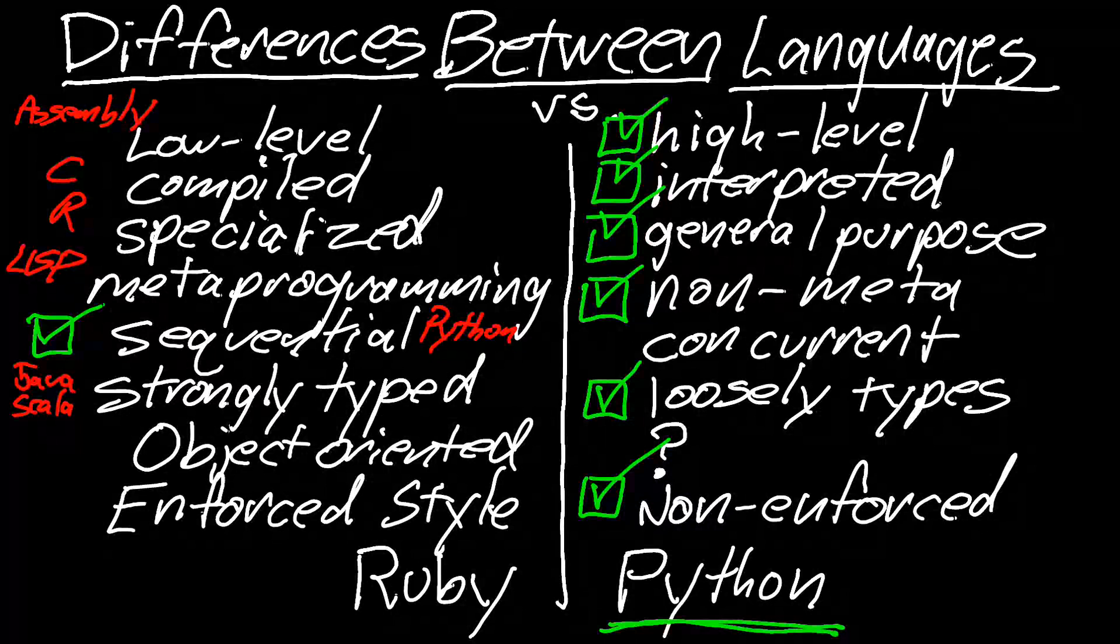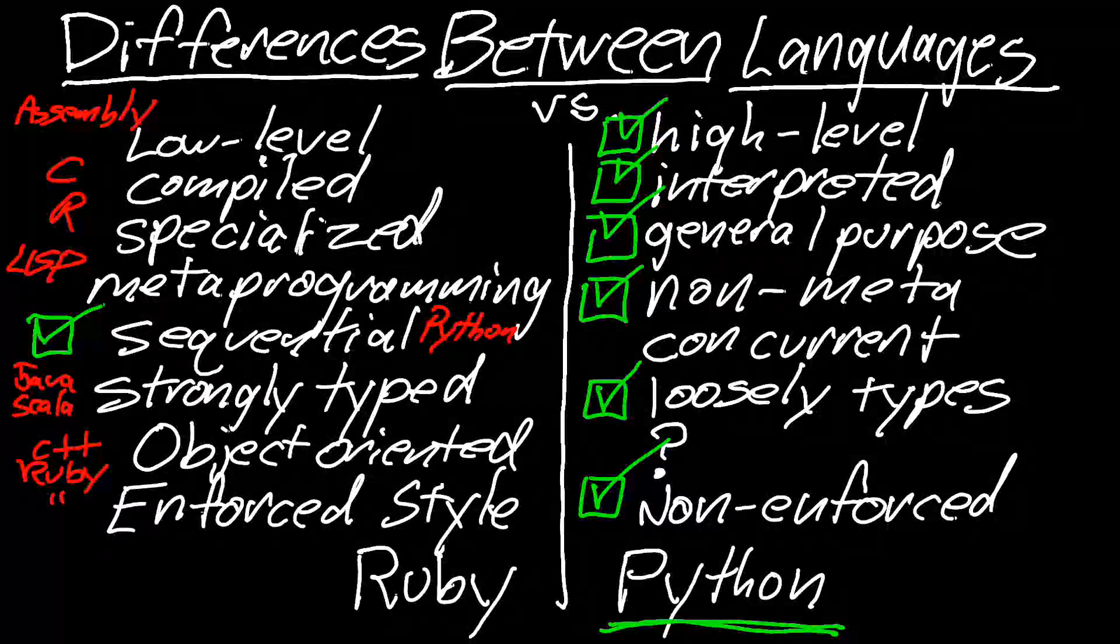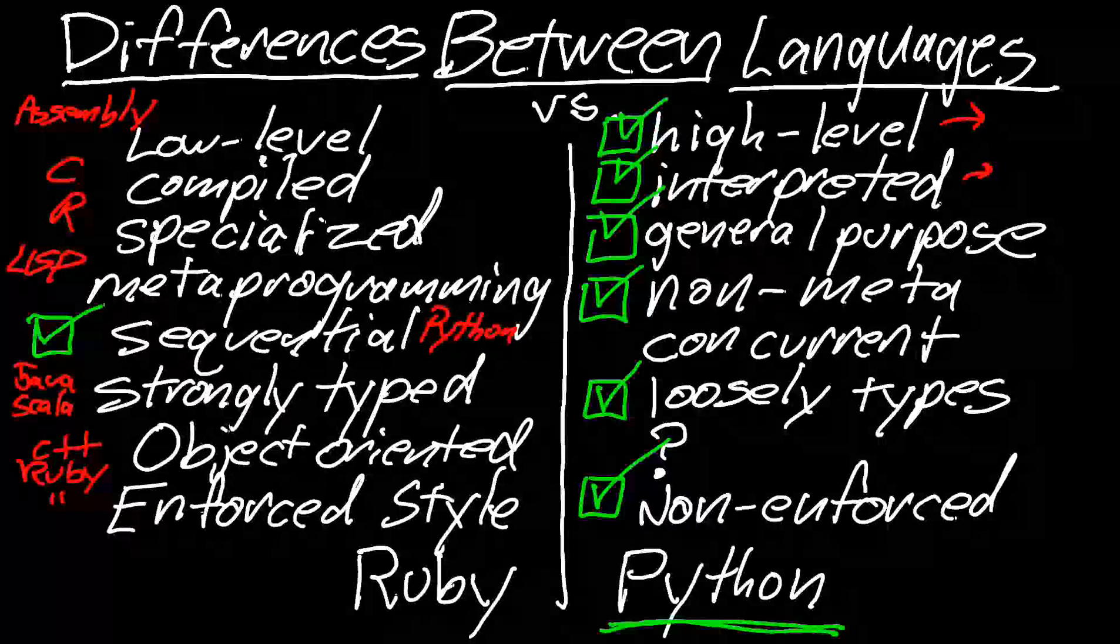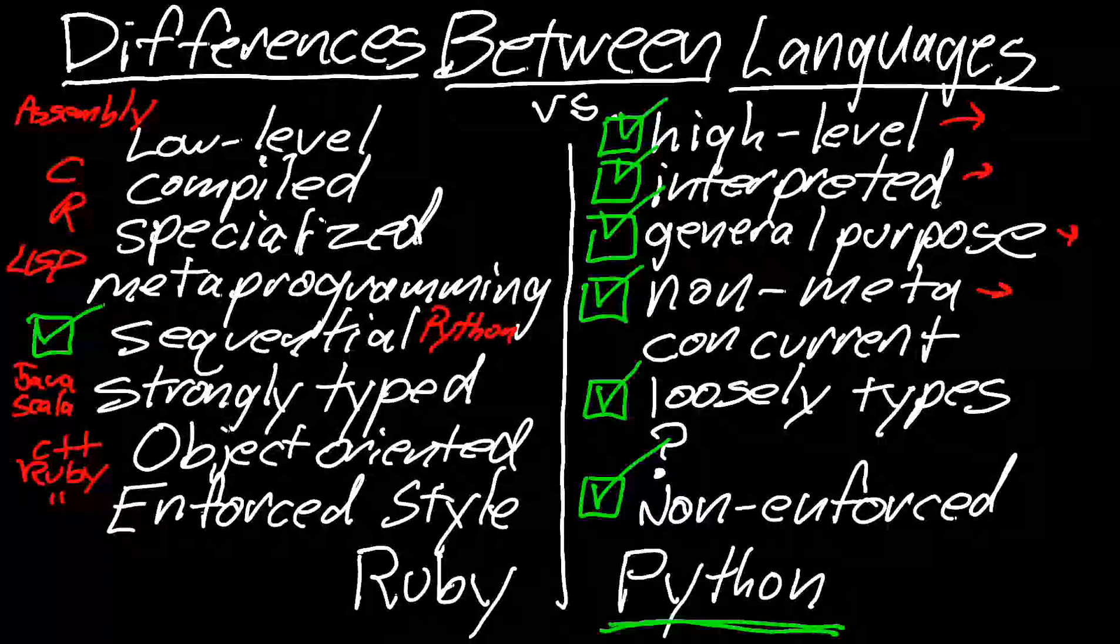Object oriented would be C plus plus and Ruby. And for enforced style again, Ruby. High level is almost everything you've heard of. Interpreted is all the P languages that you've heard of: Python, Perl, PHP and the honorary Ruby.